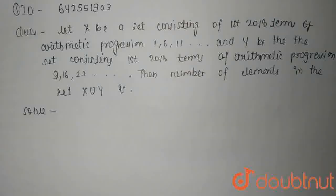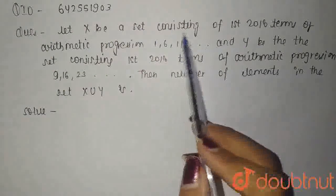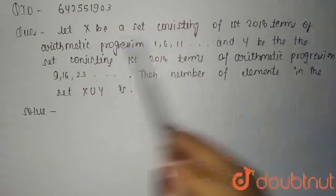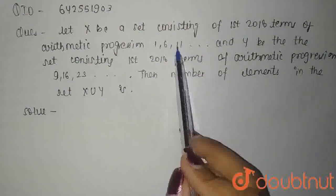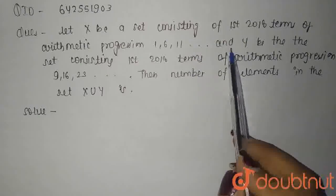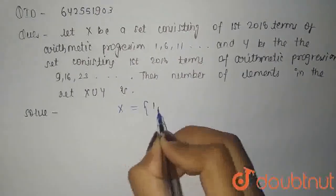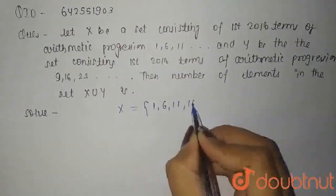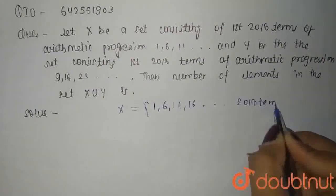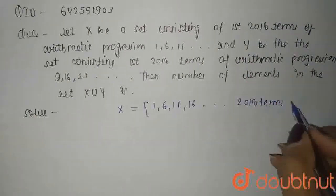Hello everyone, so our question is: Let X be a set consisting of the first 2018 terms of arithmetic progression 1, 6, 11, and so on. So what is X? X is 1, 6, 11, 16, up to 2018 terms. This is the first 2018 terms.